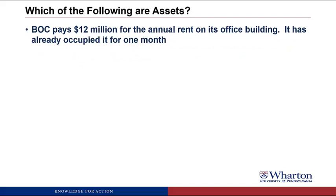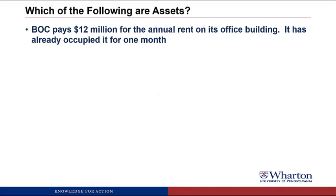BOC pays $12,000,000 for the annual rent on its office building and has already occupied it for one month. This is an asset called prepaid rent. It meets the first criteria because in a market transaction we paid for the right to occupy space for 12 months. The value of the benefits is also known — what we paid. However, at this point the value is only $11 million, not $12 million, because we've already used up one month of future benefits. So we have prepaid rent worth $11 million.